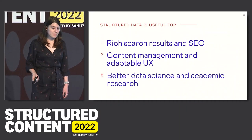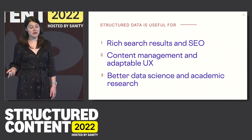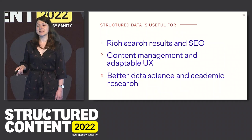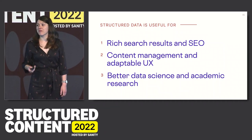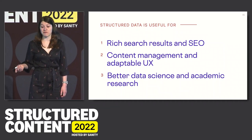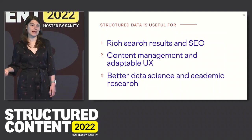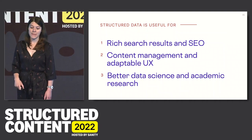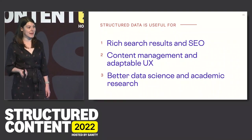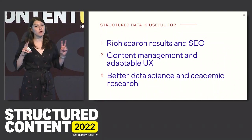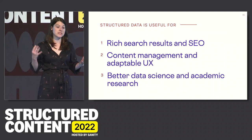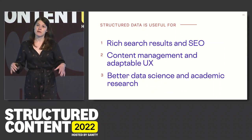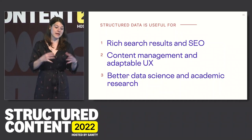Lastly, structured data makes life much better for data scientists and academic researchers. Data scientists need really good quality data to work with, and at the moment they have a lot of trouble getting it off the web — they spend a ton of time cleaning and formatting it. Having more structured data out there would make their work much better quality. There's also a lot of interest from the academic community who create what they call knowledge graphs — essentially ontologies or schemas made in domain-specific ways to share knowledge within fields like microbiology or history.